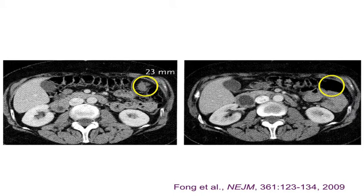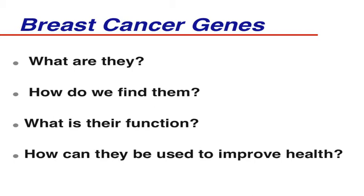Most of the talk will be about where genetic and genomic advances can be applied to medicine. I'm going to bring in examples from breast cancer, some of which are already being applied clinically and others still in clinical trials. We're going to talk mostly about breast cancer genes, but as mentioned, especially for BRCA1 and BRCA2, these are also ovarian cancer genes. We'll talk about what these genes are, how we find them, and how we can use this genetic knowledge to improve health.